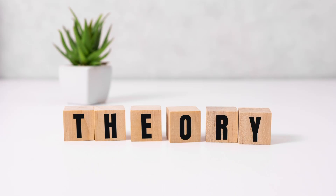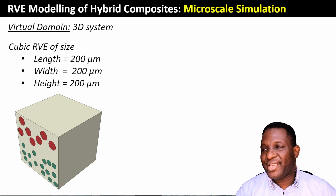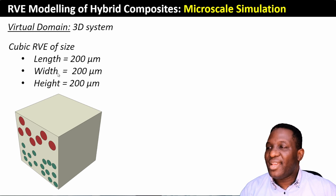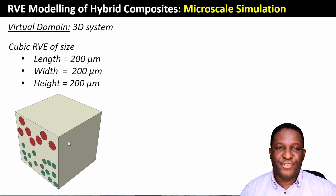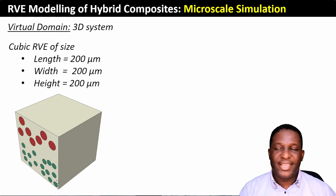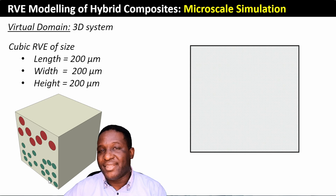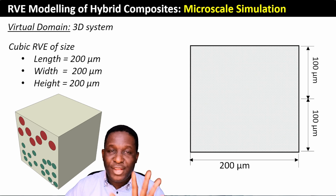As we start, I'm going to talk a little bit around the theory of what we really intend to do. This is the representative element we're working with — it's a cubic representative volume element with two fiber systems: a pineapple fiber system and an e-glass fiber system.